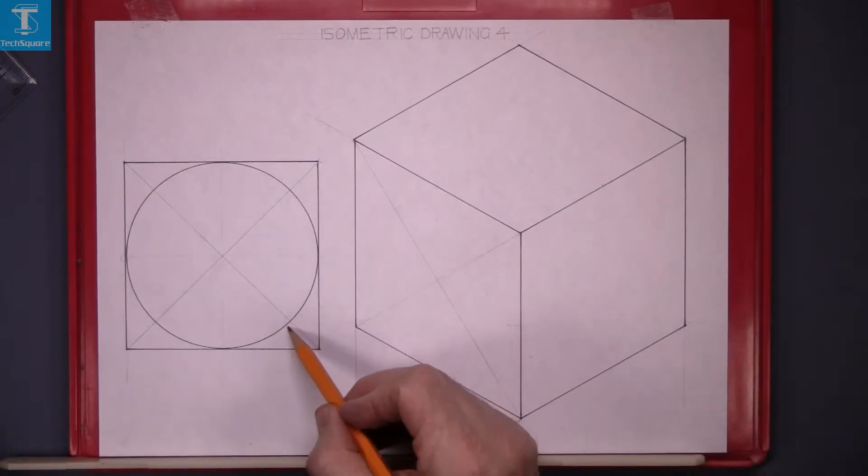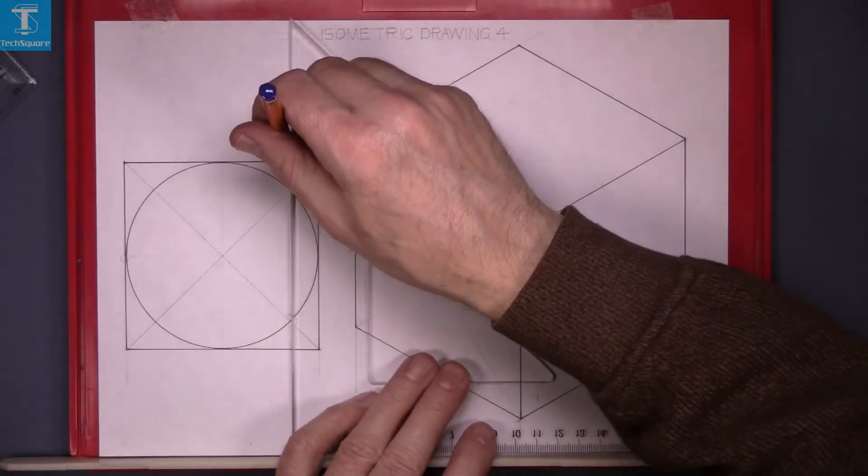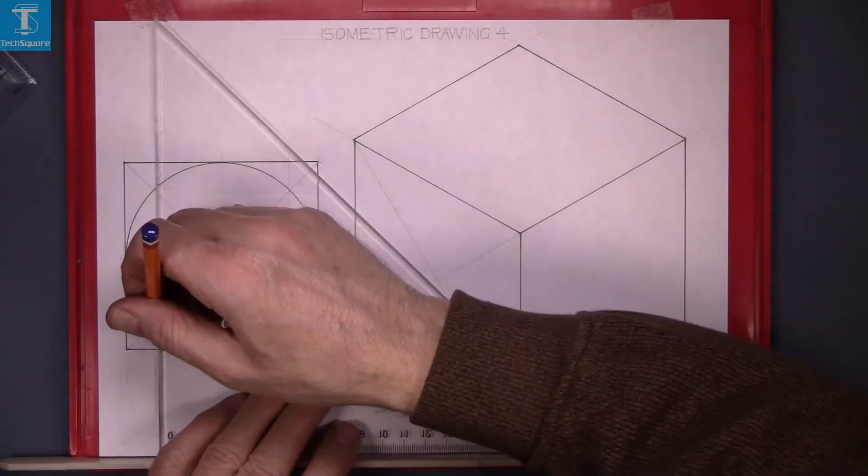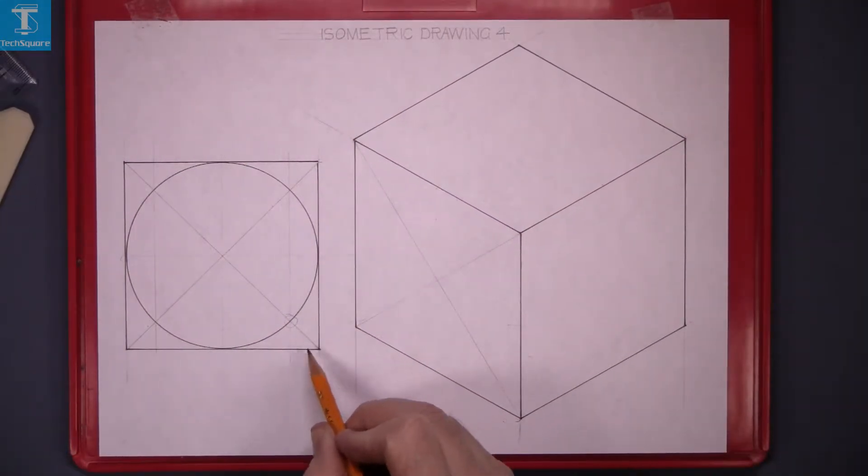Now to get that point there, draw vertically down. That is the distance on the bottom there.